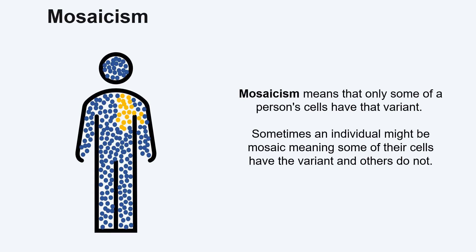An individual who is mosaic for a variant associated with a condition, also called a pathogenic variant, may show no symptoms, mild symptoms, or severe symptoms depending on how many cells are mosaic and where those mosaic cells are in the body.